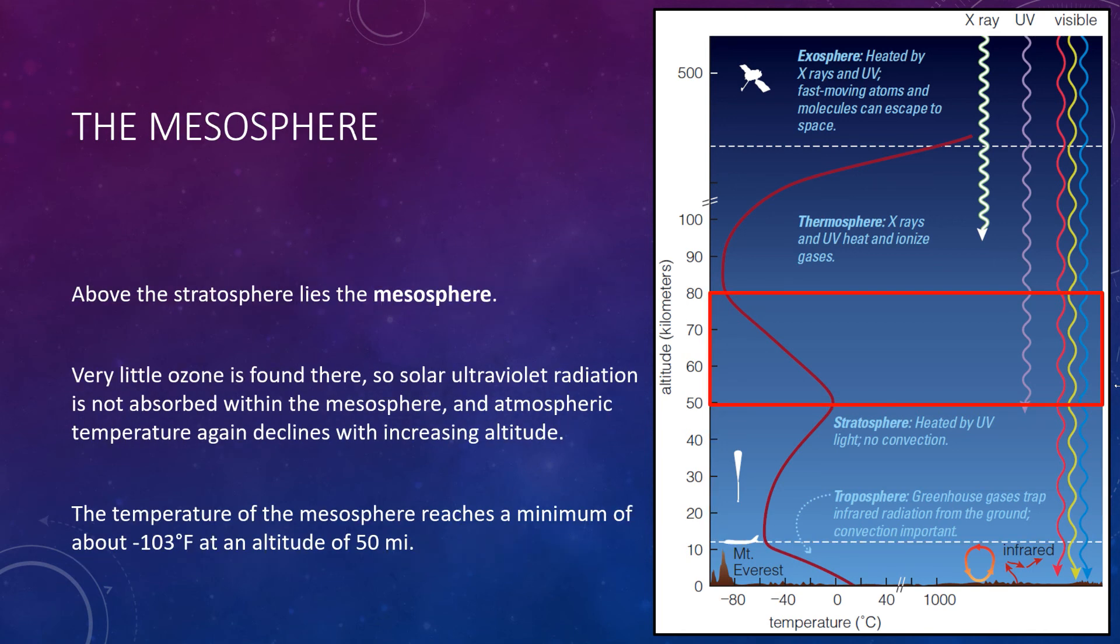Continuing upward, we reach the mesosphere. Above the stratosphere lies the mesosphere. Very little ozone is found there, so ultraviolet radiation is not absorbed within this layer, and so atmospheric temperature again begins to decline with increasing altitude. Here, nothing is being absorbed anymore, so as we go up, temperature starts to decline once again. The temperature of the mesosphere reaches a minimum of about negative 103 degrees Fahrenheit at an altitude of about 50 miles. The coldest temperatures anywhere in the atmosphere occur at the mesopause, which is the layer at the top of the mesosphere. Because accessibility is difficult, the mesosphere is one of the least explored regions of the atmosphere. It cannot be reached by the highest research balloons, nor is it accessible to the lowest orbiting satellites. Recent technology developments are just beginning to fill this gap of knowledge.